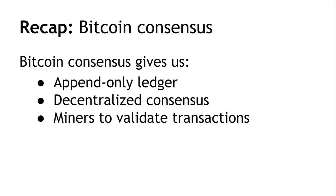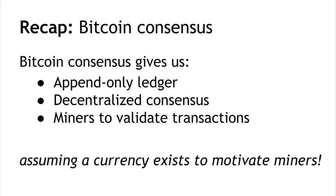To recap where we left off last time: the Bitcoin consensus mechanism gives us an append-only ledger — a data structure that we can only write to, and once data is written it's there forever. There's a decentralized protocol for establishing consensus about the value of that ledger, and the miners who perform that protocol are validating transactions, making sure transactions are well formed, that there aren't double spends, and that this thing can function as a currency. In this lecture we'll look at the details of how we actually build that currency to make the miners make this whole process happen.